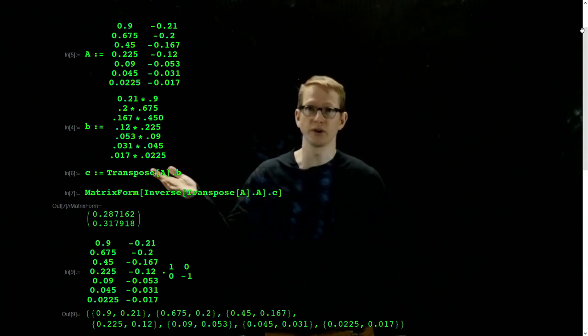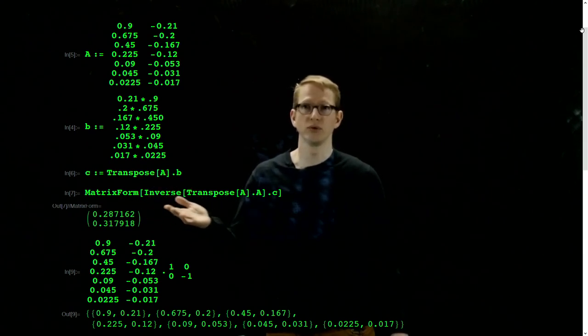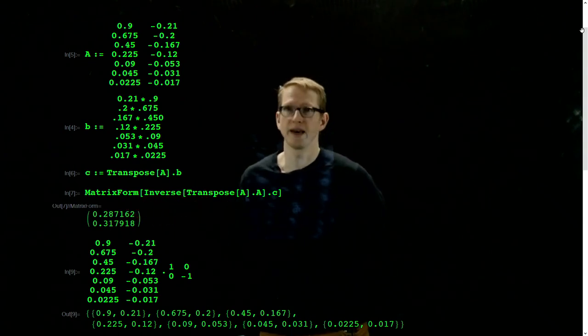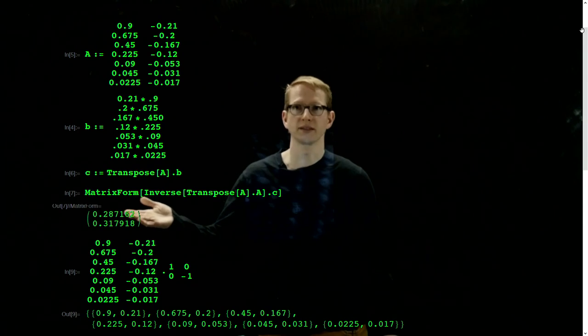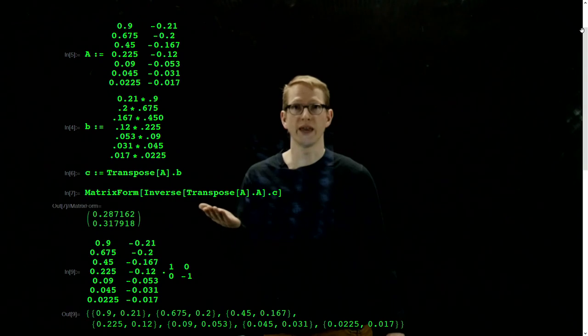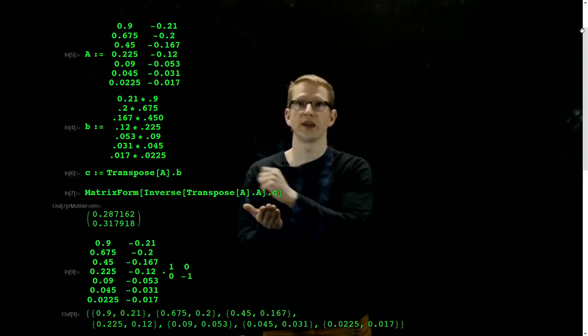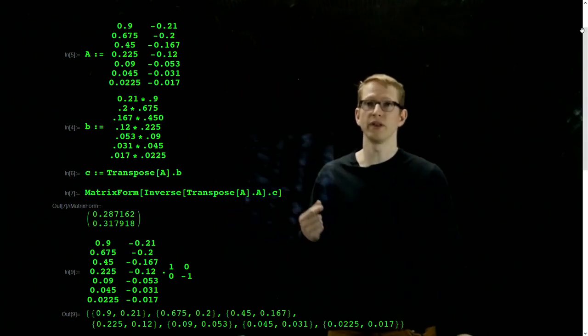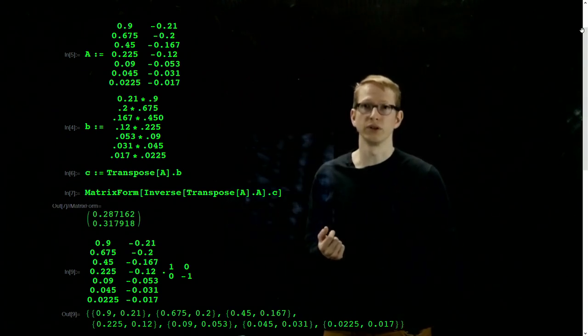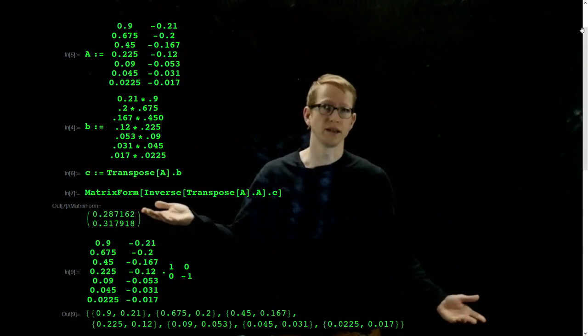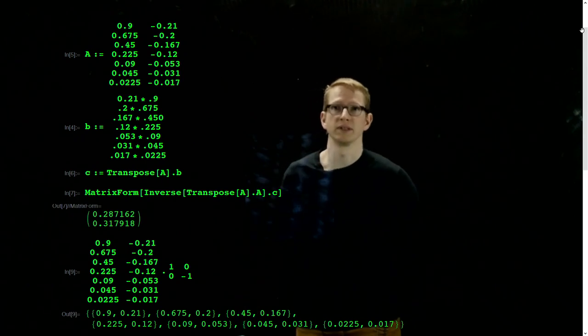And I'm just encoding and putting all of this information into Mathematica, writing down that A transpose A vector, which I'm just going to call C, and this will allow me to just immediately see what kM and what vmax are. In this case, the order is vmax comes first, and then it's kM. So I just write this in matrix form, compute the inverse of A transpose times A times this vector C, which is just A transpose times B, and we know that that would give us the constants that we're looking for. And supposedly they're 0.287 and 0.317 and so on.